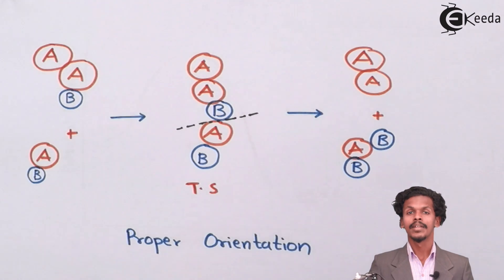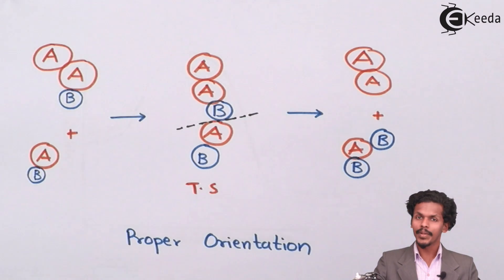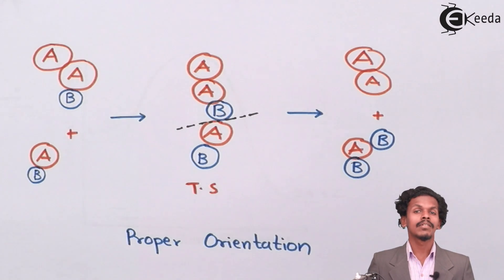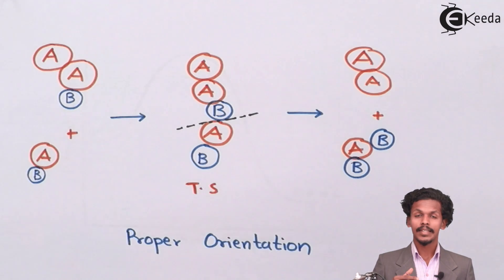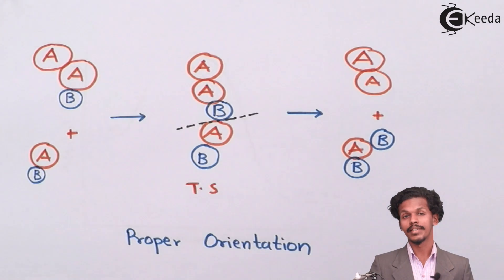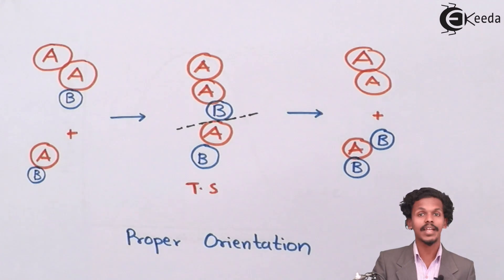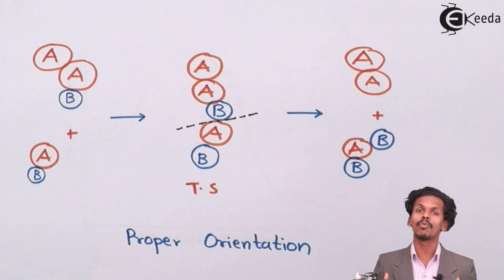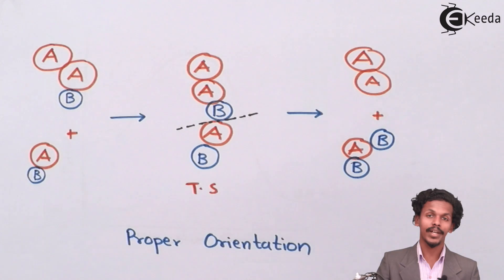Suppose we have 100 moles of gas molecules where 50% is reactant A and 50% is reactant B. It is not always necessary that all 50% of A will collide with 50% of B in a proper orientation. Only those molecules that show proper orientation along with the required activation energy will give the product, while the others will not. The others will need to gain the minimum energy and achieve proper orientation before the reaction can happen.